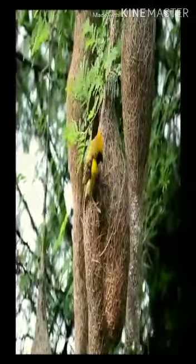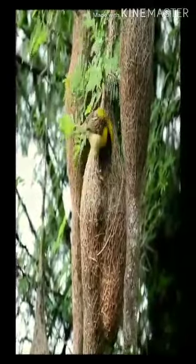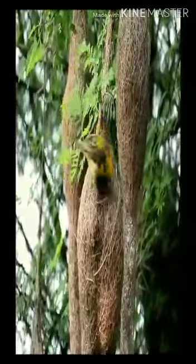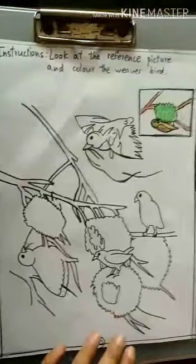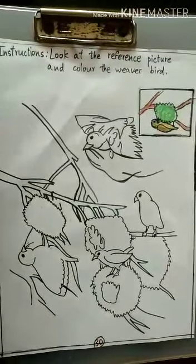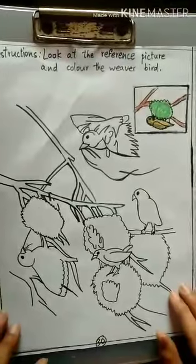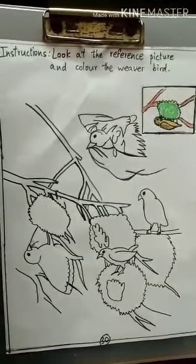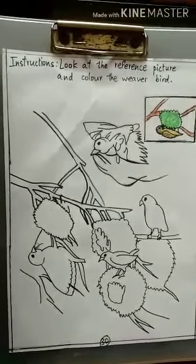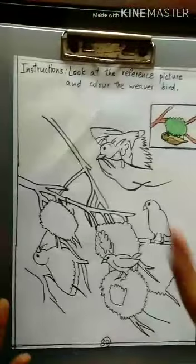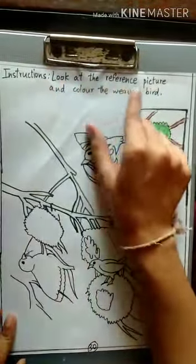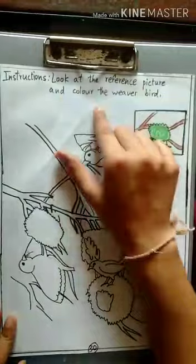The name of this bird is weaver bird, and it is small in size. We are going to do a coloring activity on page number 30, which is related to the weaver bird. Let's look at the instructions: look at the reference picture and color the weaver bird.